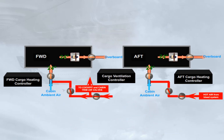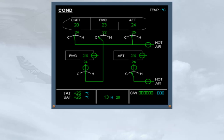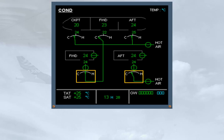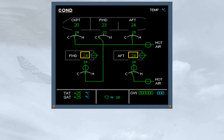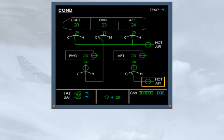Let's see how information on the cargo conditioning system is presented to the pilots. On the eCAM COND page, the indications related to each cargo compartment are the inlet and outlet isolation valves, the trim air valve, the duct inlet temperature, the zone temperature, the hot air valve for cockpit, cabin, and forward cargo trim air supply, and the aft cargo pressure regulating valve. Notice that there are no indications for the extraction fans.